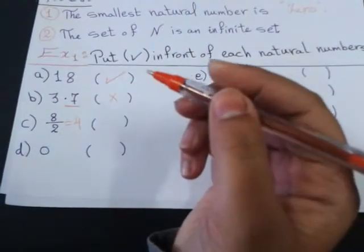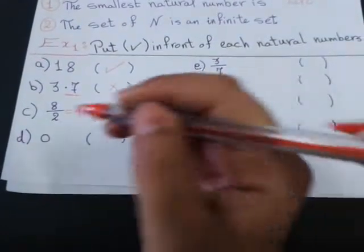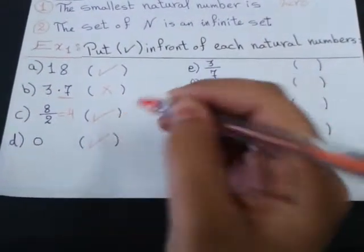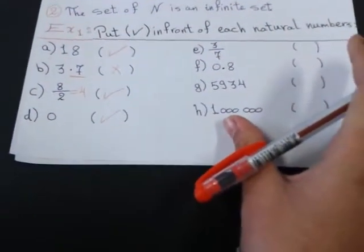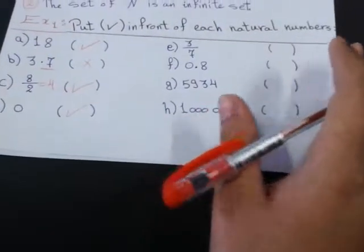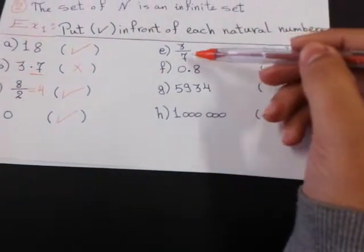4 is a natural number or no? Yes, it's natural. 0. It's natural. The first natural number or the smallest natural number. 3 over 7.